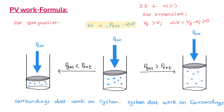Similarly, when a gas is compressed, the final volume is smaller than the initial volume, so delta V is negative, and based on the formula, the work done is positive. The negative sign in the formula agrees with our sign convention: when a gas expands, it does work on the surroundings and its internal energy decreases — work done is negative. For compression, the surroundings does work on the system, its internal energy increases, and work done is positive.